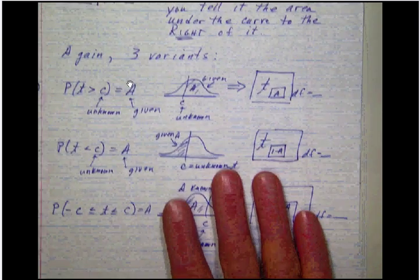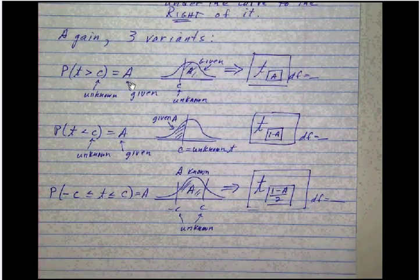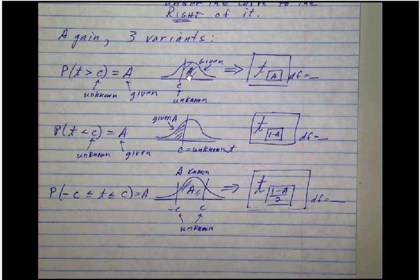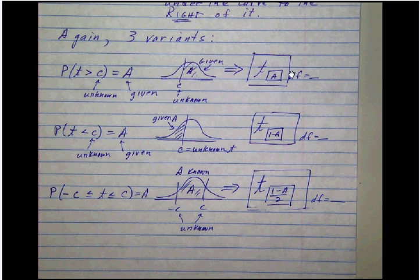So if you just simply want the unknown t-score but you know the area, you just do that. If you want the t-score but you have the area to the left, you can embed that area down below here in the t-score like we did before.